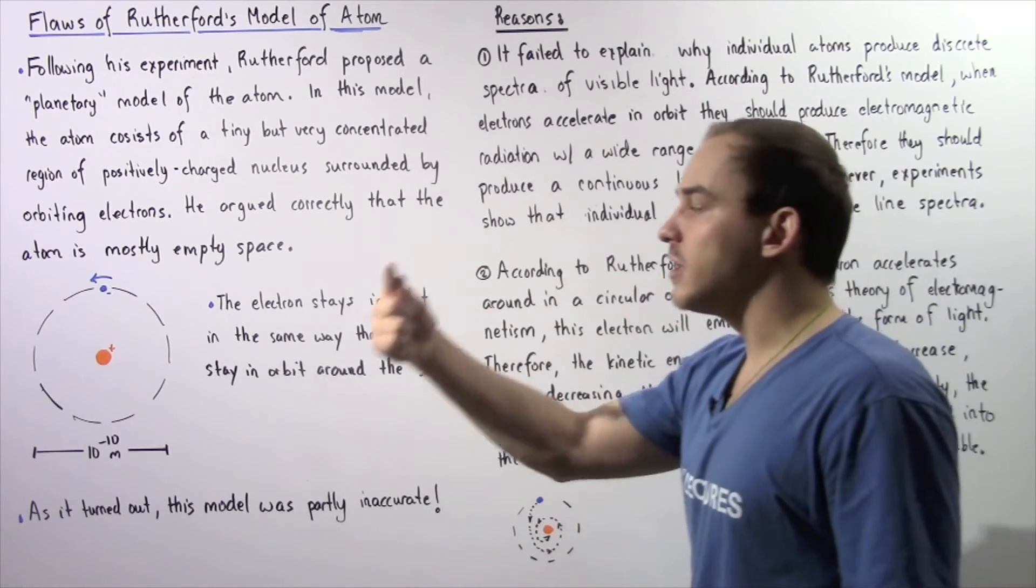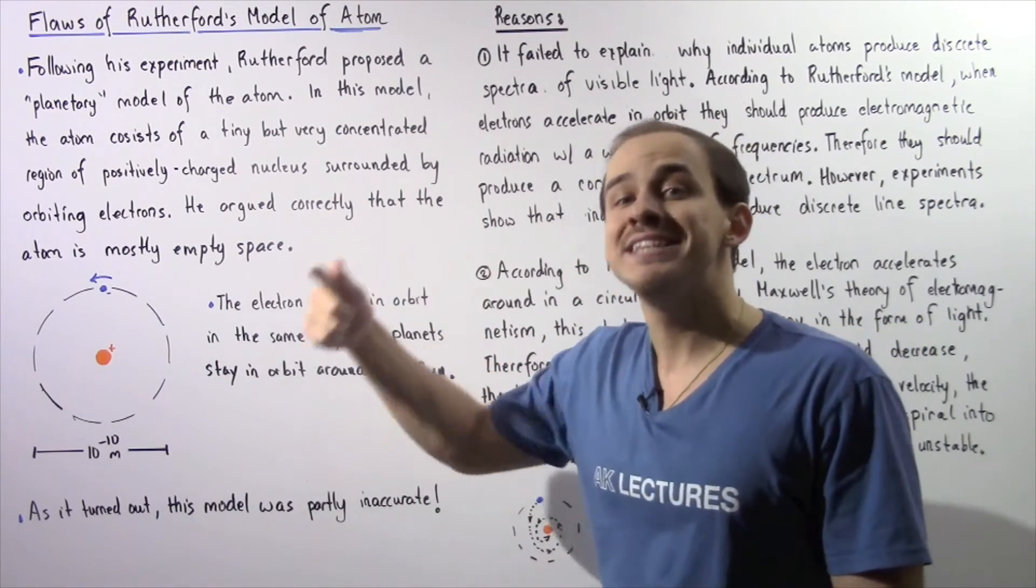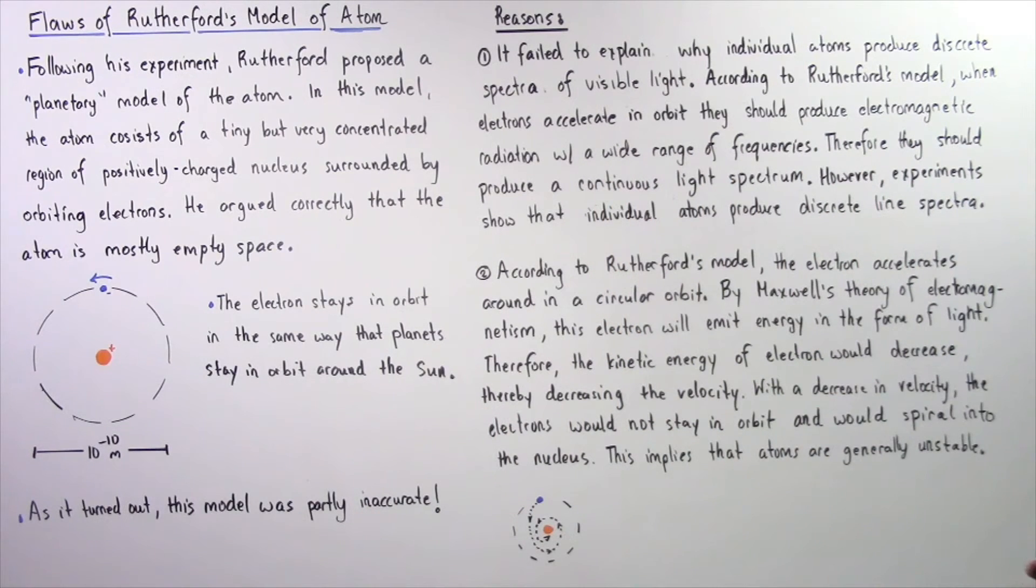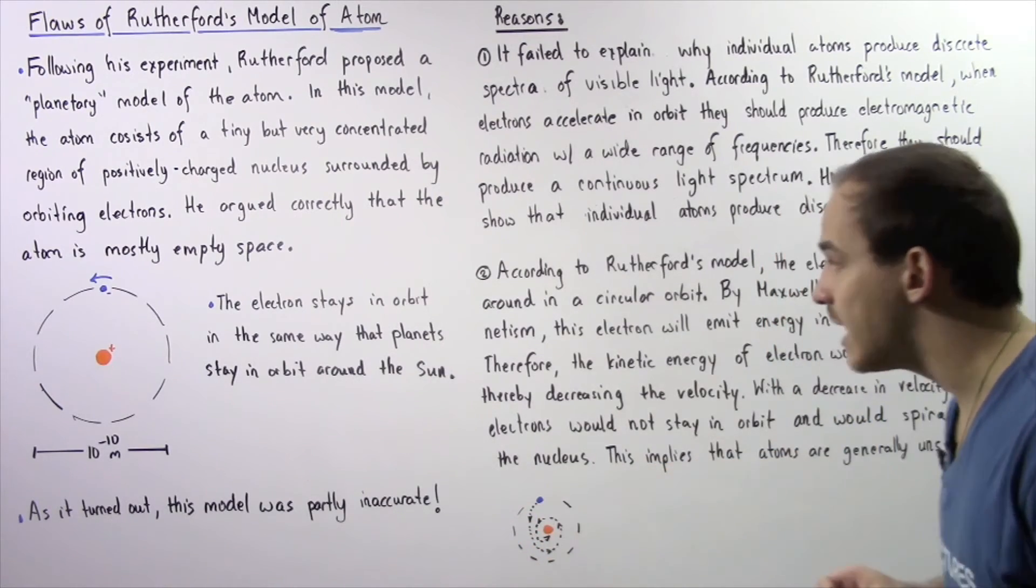So the kinetic energy of the electron should continually decrease, and that should continually decrease the velocity of that electron. Now, with a decrease in velocity, the electrons would not be able to stay in orbit around that nucleus. In fact, they would spiral into the nucleus, as shown in the following diagram.